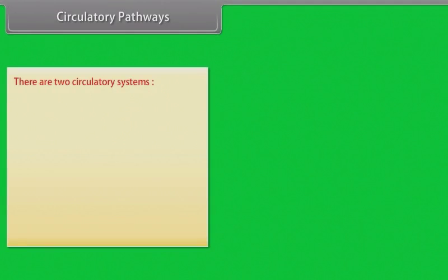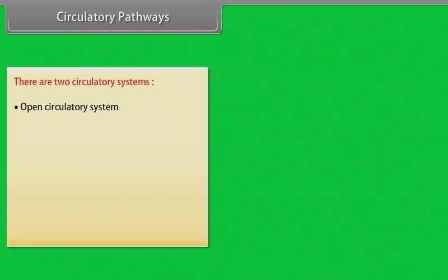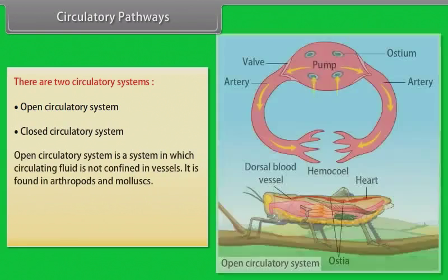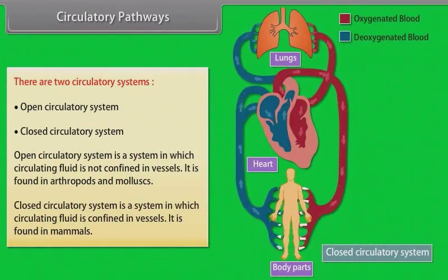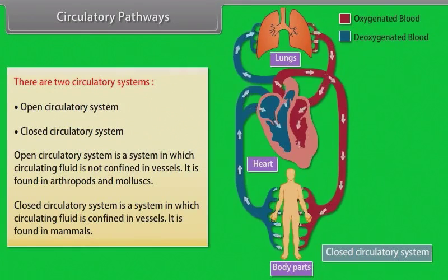There are two circulatory systems: open circulatory system and closed circulatory system. Open circulatory system is a system in which the circulating fluid is not confined in vessels; it is found in arthropods and mollusks. Closed circulatory system is a system in which the circulating fluid is confined in vessels; it is found in mammals.